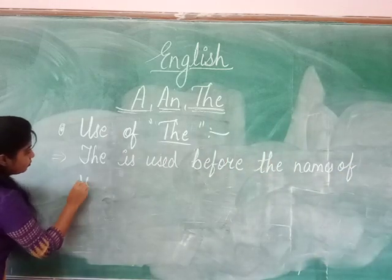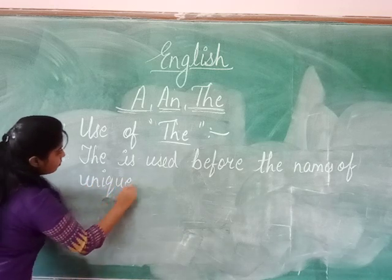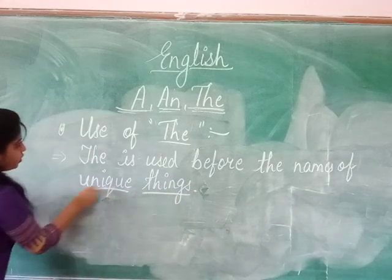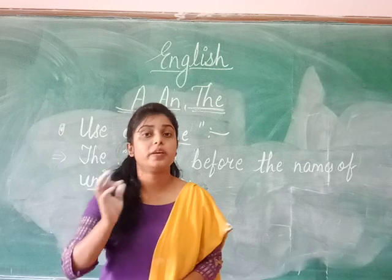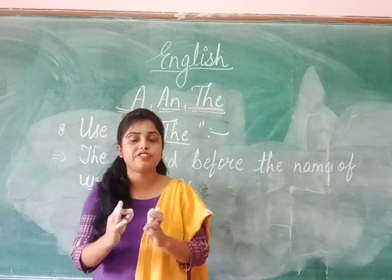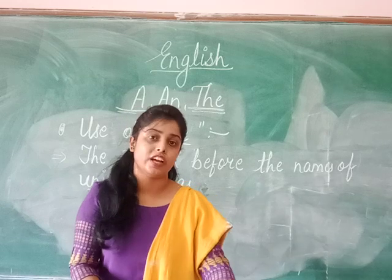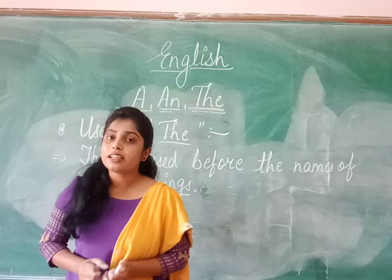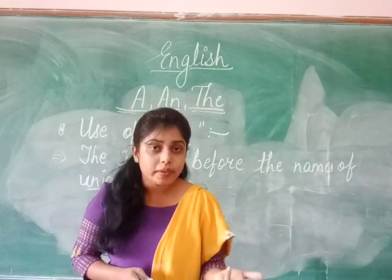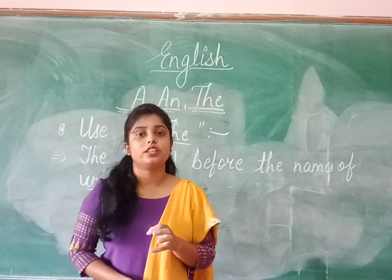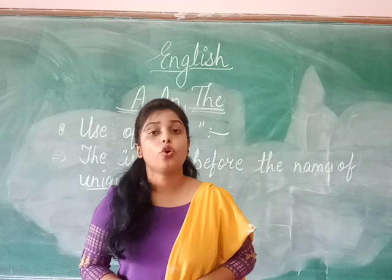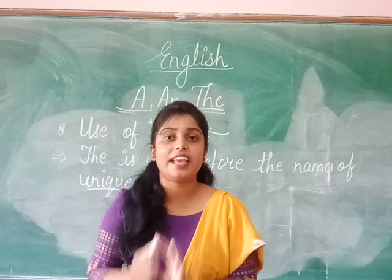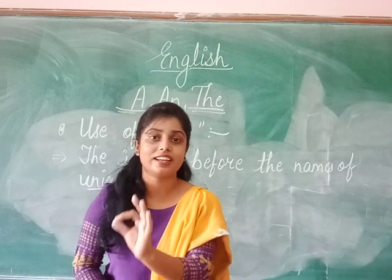Unique things means things that are one and only in this world — there is nothing else like them. All those things that are one and only in the world are considered unique. Before names of such unique things, we use article THE.